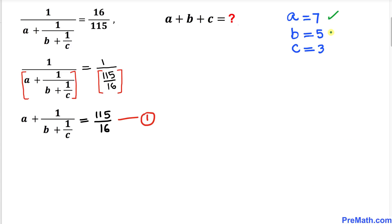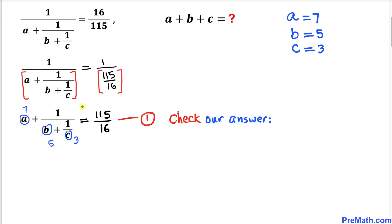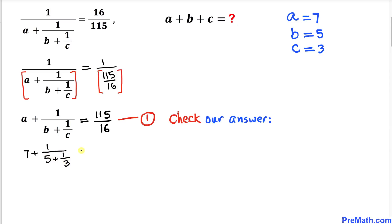So our a value is 7, b is 5, and c is 3. Now let me show you how to verify these values. I'm going to replace a by 7, b by 5, and c by 3 to check whether the left hand side is indeed equal to the right hand side. Plugging in: a is 7, so 7 plus 1 divided by 5 plus 1 over 3. The question is: does this equal 115 divided by 16?